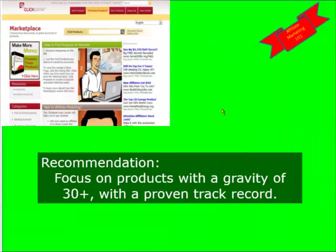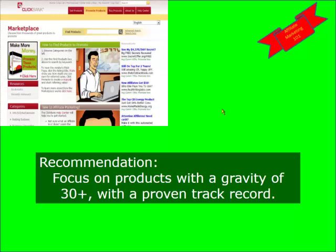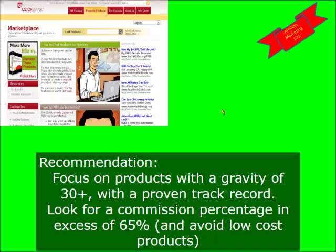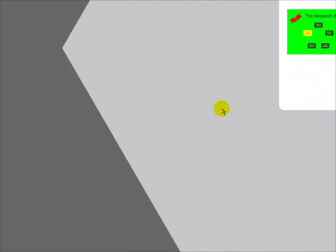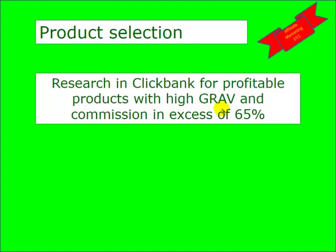What recommendations can we make when looking for an affiliate product? Firstly, focus on products with a gravity of 30 or more, which means it's got a proven track record. Secondly, look for a commission percentage in excess of 65%. And please avoid low-cost products — if you're going to go for an affiliate product that's worth, say, $2, you're not going to be very profitable selling that. So look for a good value product. We've been looking at product selection and one way is researching ClickBank, looking for high GRAV and commission in excess of 65%.